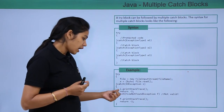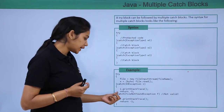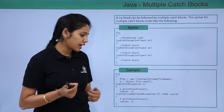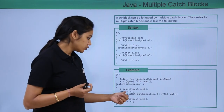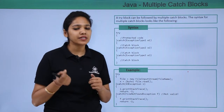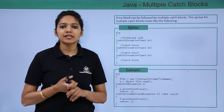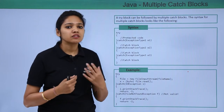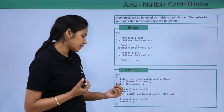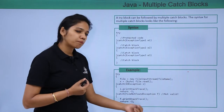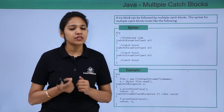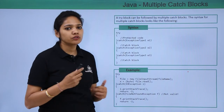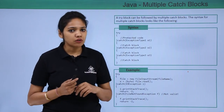After closing the first catch block, you immediately provide the next catch block — the next exception handler. For example, it may be a FileNotFoundException. The first exception you anticipated was IOException, and the next is FileNotFoundException. Again, you print what kind of exception it is and where it occurred. This is how you define multiple catch blocks.